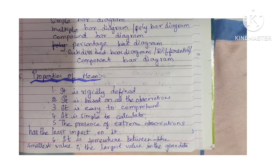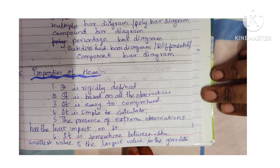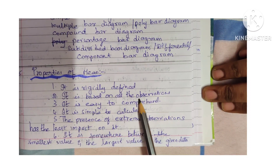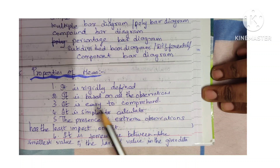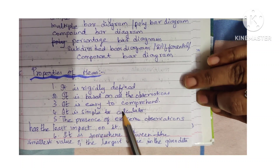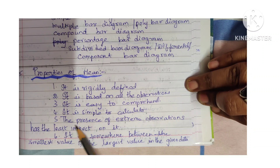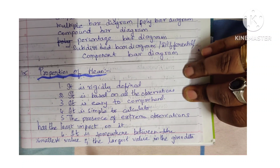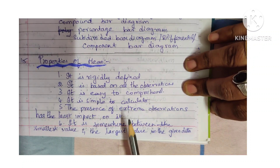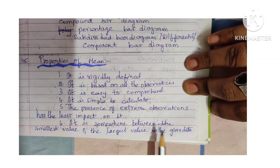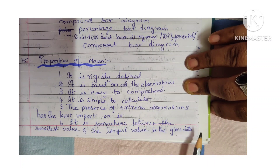Next is properties of mean: it is rigidly defined; it is based on all the observations; it is easy to comprehend; it is simple to calculate; the presence of extreme observations has the least impact on it; and it is somewhere between the smallest value and the largest value in the given data.